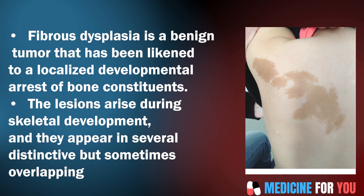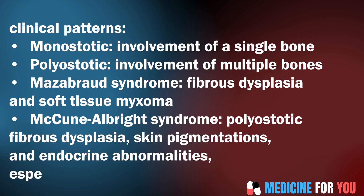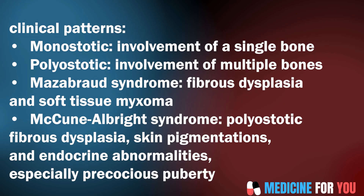The lesions arise during skeletal development and they appear in several distinctive but sometimes overlapping clinical patterns: monostatic, involvement of a single bone; polyostatic, involvement of multiple bones; Mazabraud syndrome, fibrous dysplasia and soft tissue myxoma; and McCune-Albright syndrome, which includes polyostatic fibrous dysplasia, skin pigmentations, and endocrine abnormalities, especially precocious puberty.